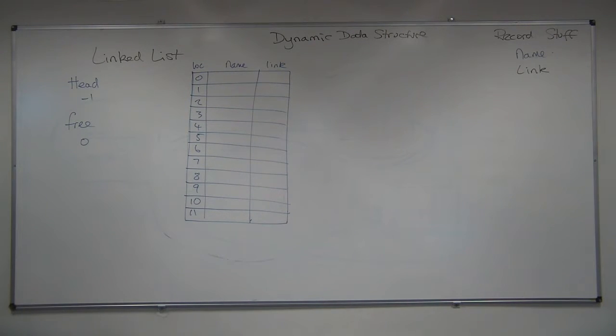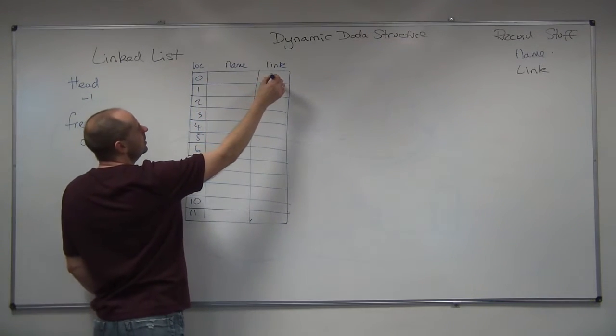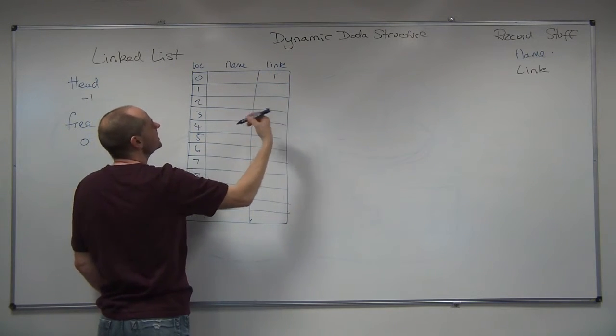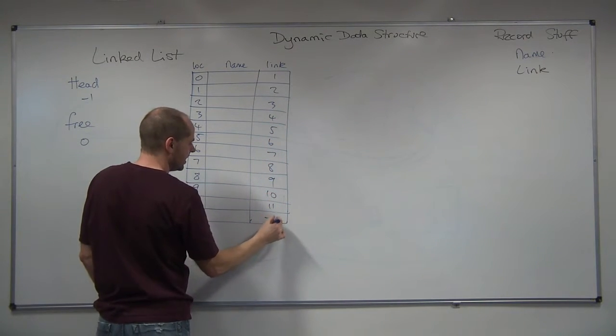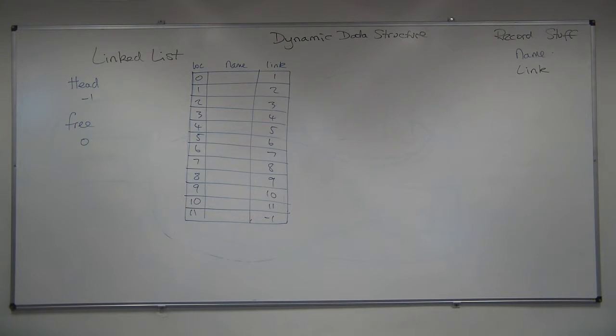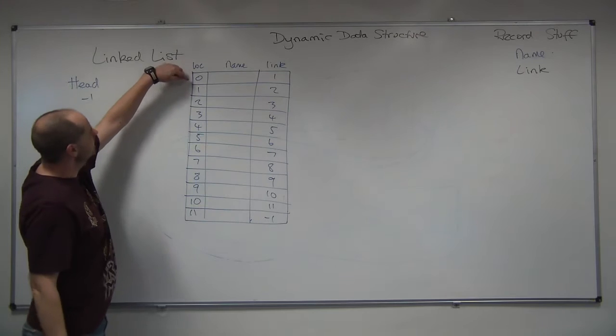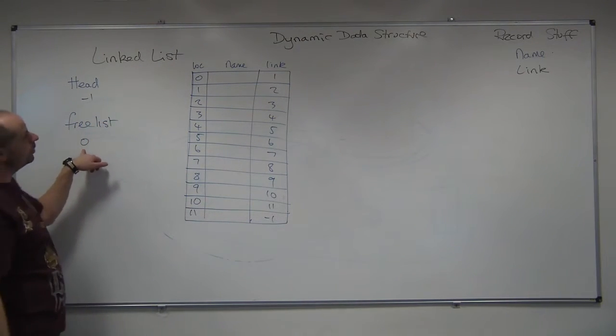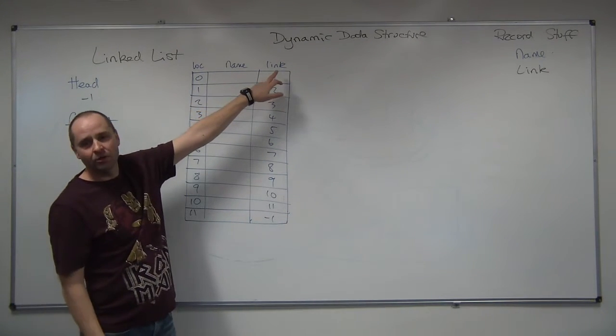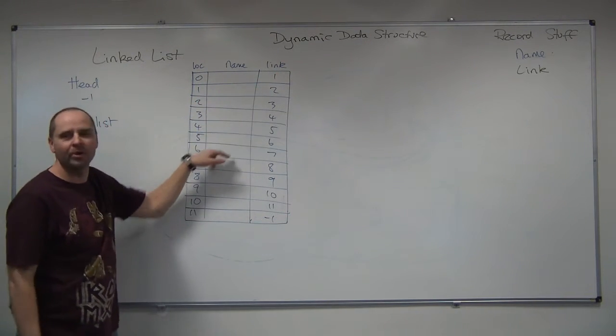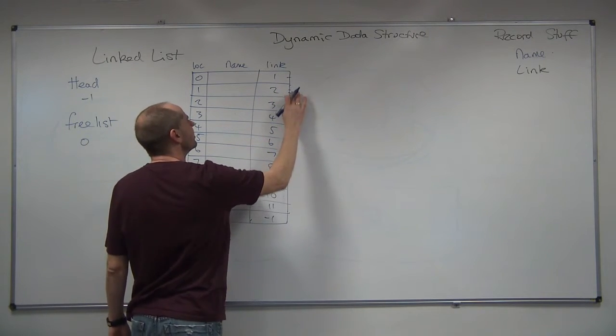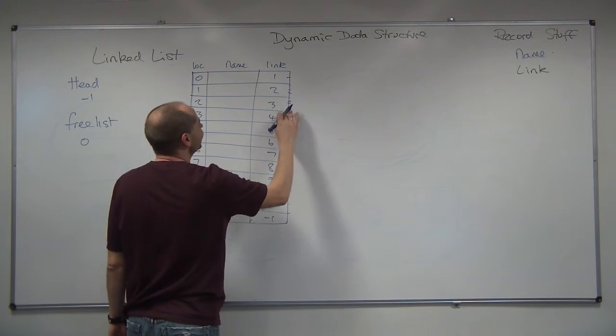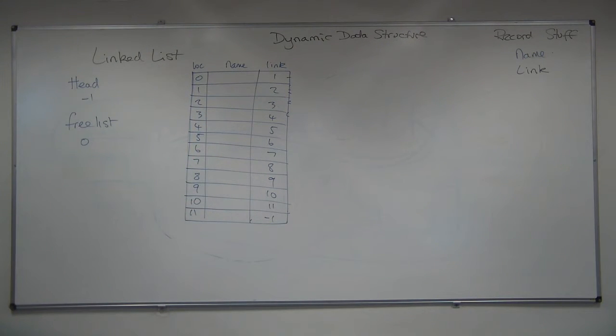What I have to do, I need to know where all the free spaces are. So what I do is I create a linked list of the free spaces. So what I've done is I've joined all the free spaces together. So the free list points to location 0. What follows location 0 is position 1 and so on. So they're all pointing to each other.